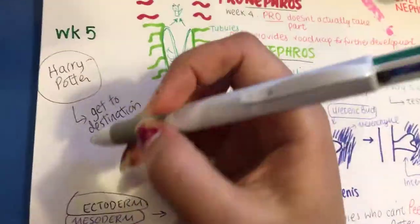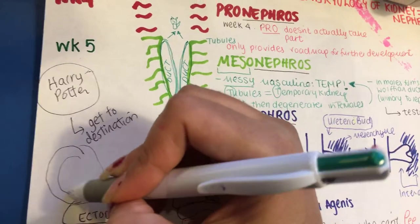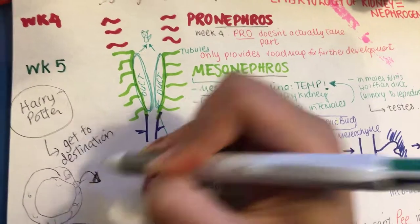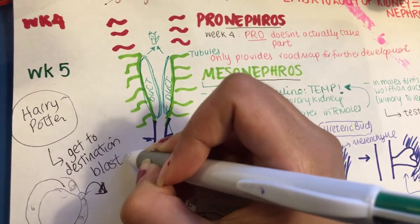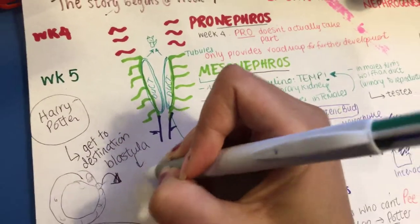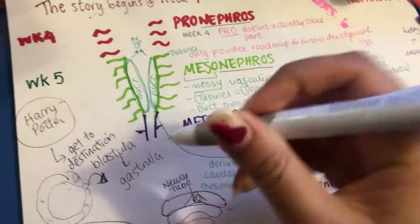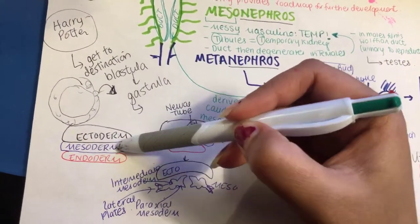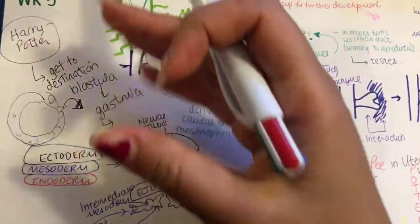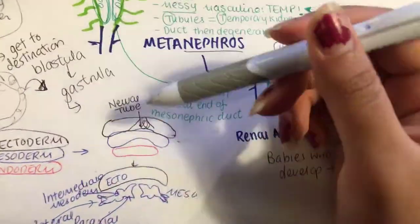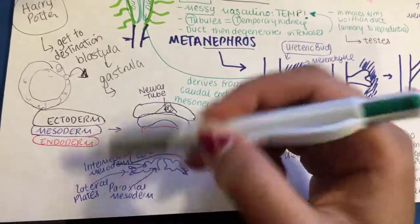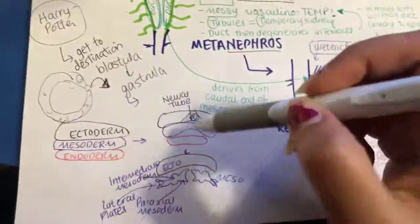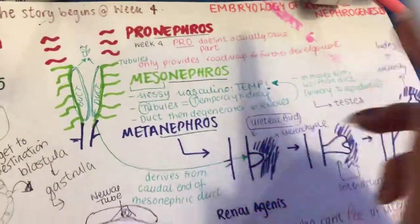The story begins at week four. We are looking at a blastocyst — essentially a ball of cells — and a blastula can change into a gastrula through the process of gastrulation. In that case, you have divisions of ectoderm, mesoderm, and endoderm, each responsible for different derivatives. Let me give you a quick summary of what's happening to these different layers before we go into nephrogenesis.